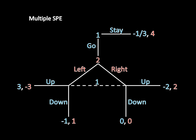The example that we'll be looking at today is this game right here. Player 1 begins by choosing to stay or go. If he chooses to go, then Player 2 chooses left or right. And following that, we see something we've never encountered before. Player 1, when he makes his move, doesn't actually know whether Player 2 has chosen left or right. This dashed line here is indicative of that fact, and his options are to go up or down — but he can't actually observe whether Player 2 has gone left or right before.